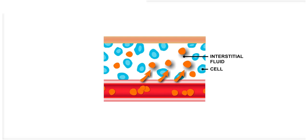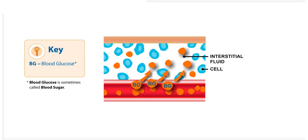When you take a finger stick meter reading, you are measuring the glucose level in your blood. We refer to this type of glucose reading as blood glucose, or BG.